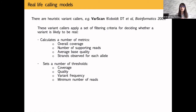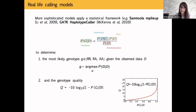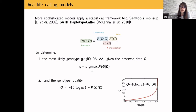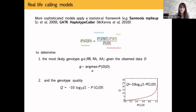The most widely used variant calling methods are probabilistic — specifically Bayesian. Sequencing two mixed DNA molecules is a probabilistic event, as is the occurrence of sequencing errors. More sophisticated tools like bcftools mpileup and the GATK HaplotypeCaller use Bayes' theorem: they calculate the posterior probability of a genotype given the sequencing data D, which equals the prior genotype probability times the genotype likelihood, divided by a normalizing constant.